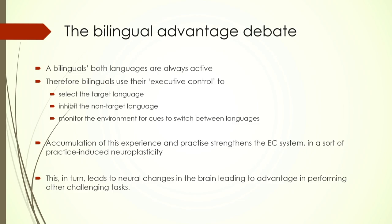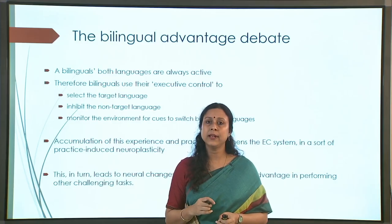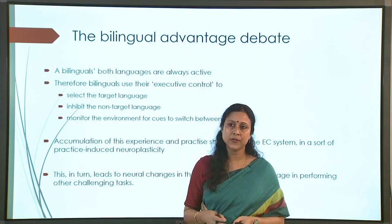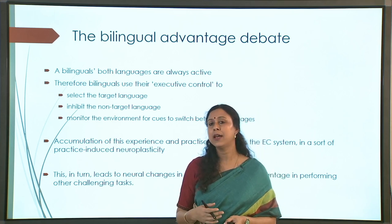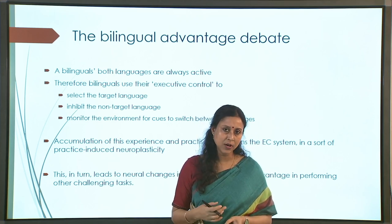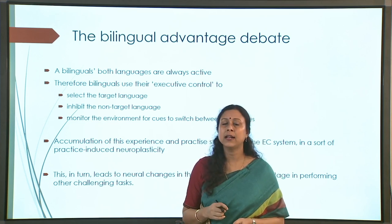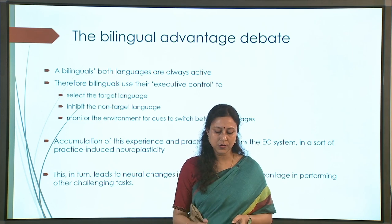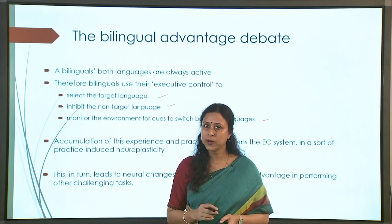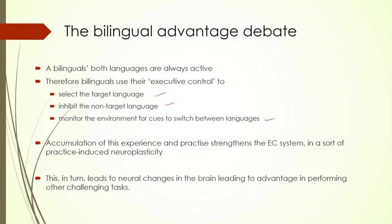Connecting this to bilingualism is straightforward, because in bilinguals both languages are always active at every level - morphological, phonological, syntactic, semantic - simultaneously. Hence you need a control mechanism to manage this. That control mechanism helps select the target language, inhibit the non-target language, and monitor the environment for any cue based on which you may need to switch languages.